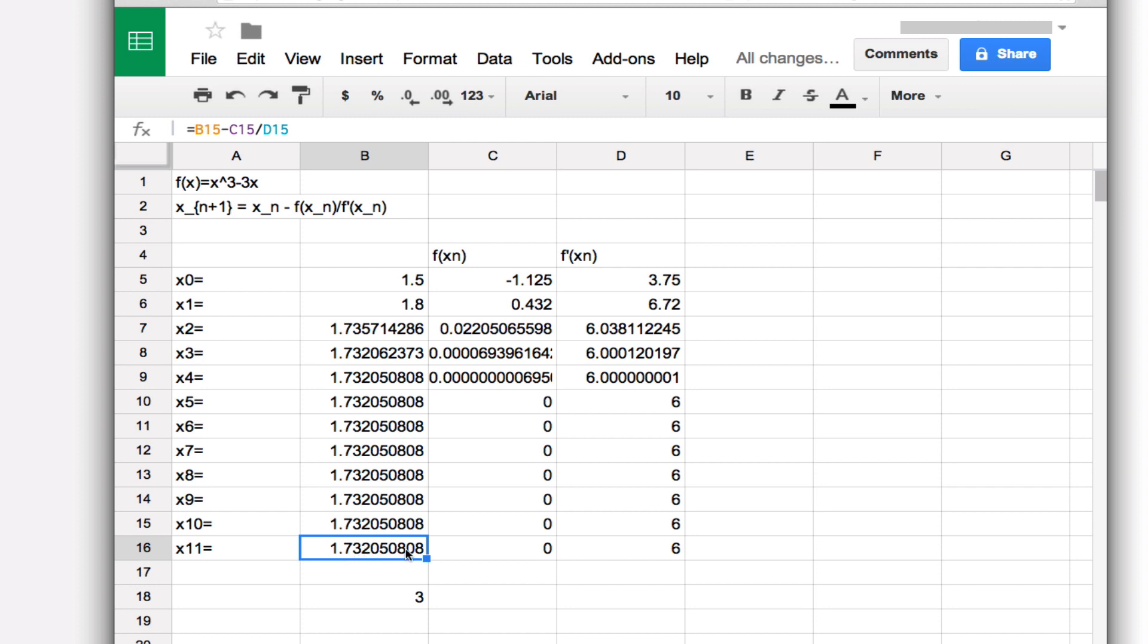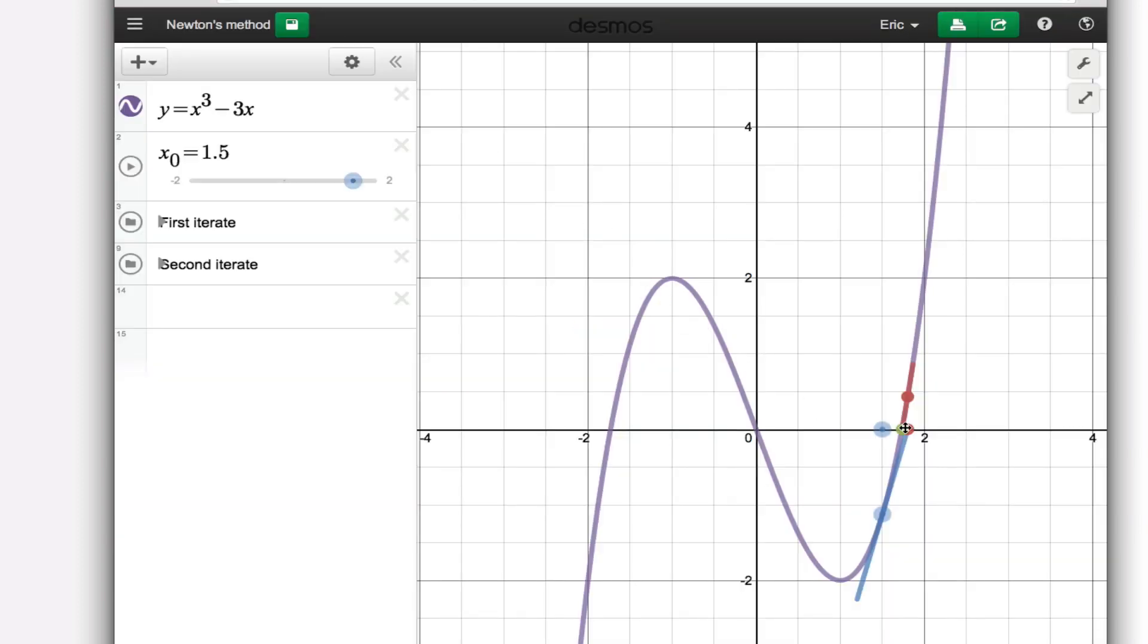And that is how we use a spreadsheet to implement Newton's method and use some kind of graphing calculator technique to identify a suitable starting point.